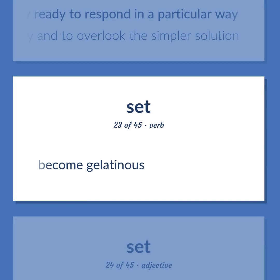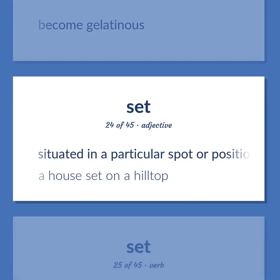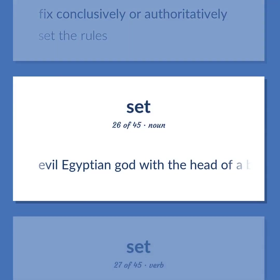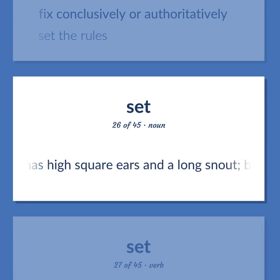Become gelatinous. Situated in a particular spot or position. A house set on a hilltop. Fix conclusively or authoritatively. Set the rules. Evil Egyptian god with the head of a beast that has high square ears and a long snout. Brother and murderer of Osiris.